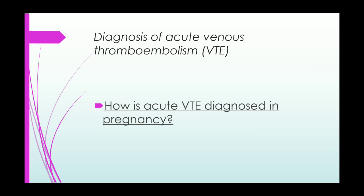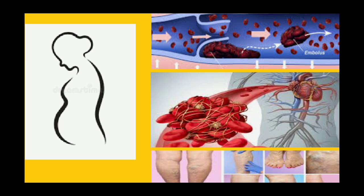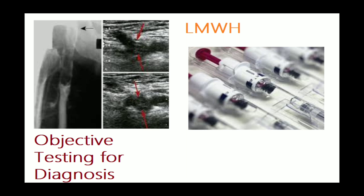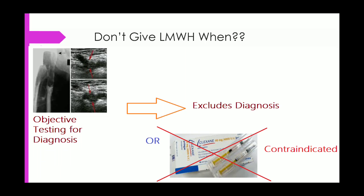The first point discussed is the diagnosis of acute venous thromboembolism. Any woman with symptoms or signs suggestive of VTE should have objective testing performed expeditiously, and treatment with low molecular weight heparin should be started as soon as possible until the diagnosis is excluded by objective testing, unless treatment is strongly contraindicated.